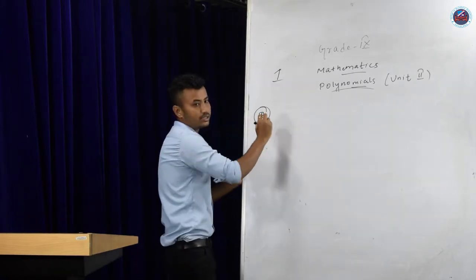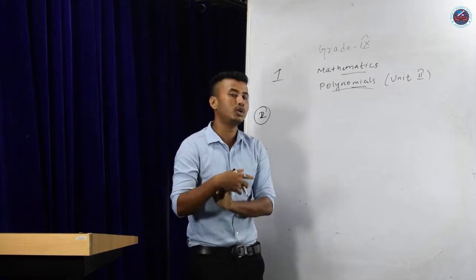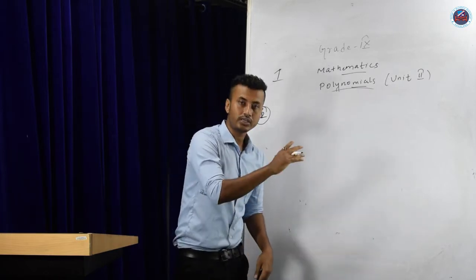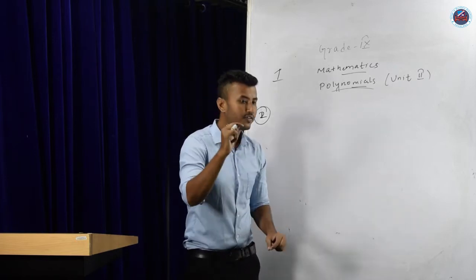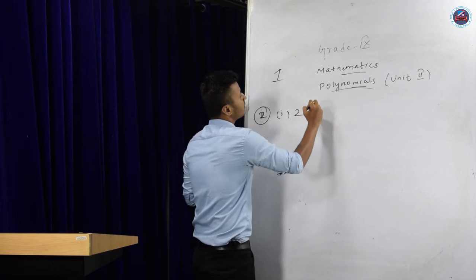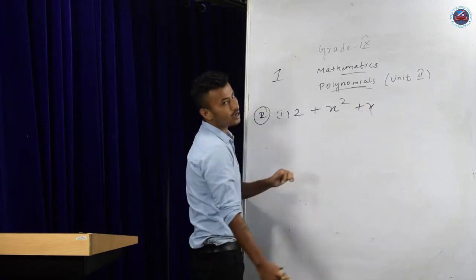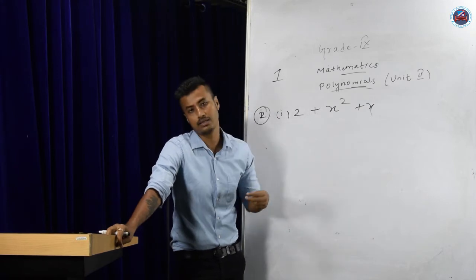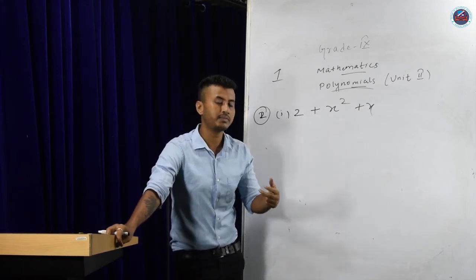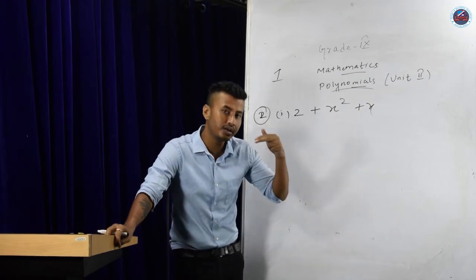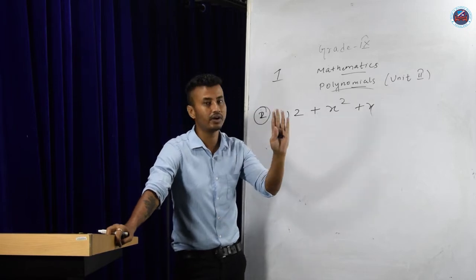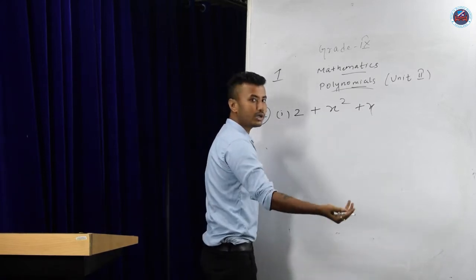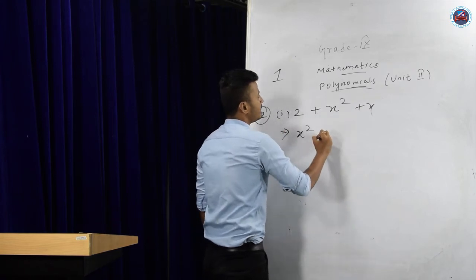Let's go to question number 2: write the coefficient. I have already explained that coefficients are numbers placed in front of a variable. The first expression is 2 plus x² plus x. I will give you a trick — whenever you are writing any expression, it should always be in descending order in terms of power: highest power first, then lower. This is a jumbled equation, so I will first rewrite it in proper form.